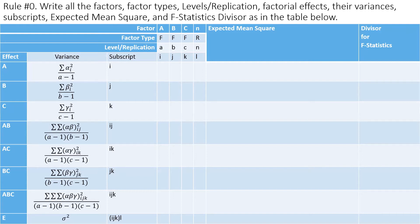Ground Rule Zero: write everything as you see on this screen. The effect goes in column one, the variance associated with that effect goes in the next column, the subscript goes in the third column, and in the remaining columns you write all the factors A, B, C, plus the replication and the factor type. In this case all factors are fixed, so write 'F' for each instead of typing out 'fixed.'